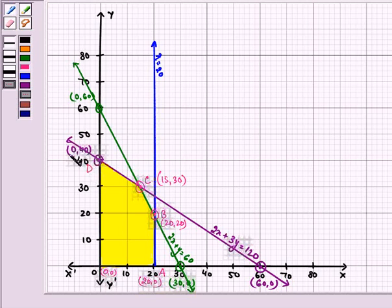Then we have D having coordinates (0,40). Now on all these points that is O, A, B, C and D, we will find out the value of Z.